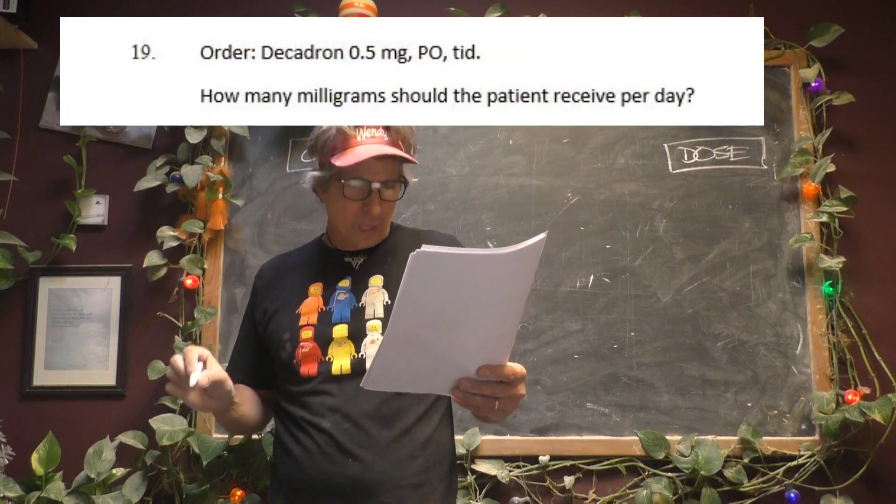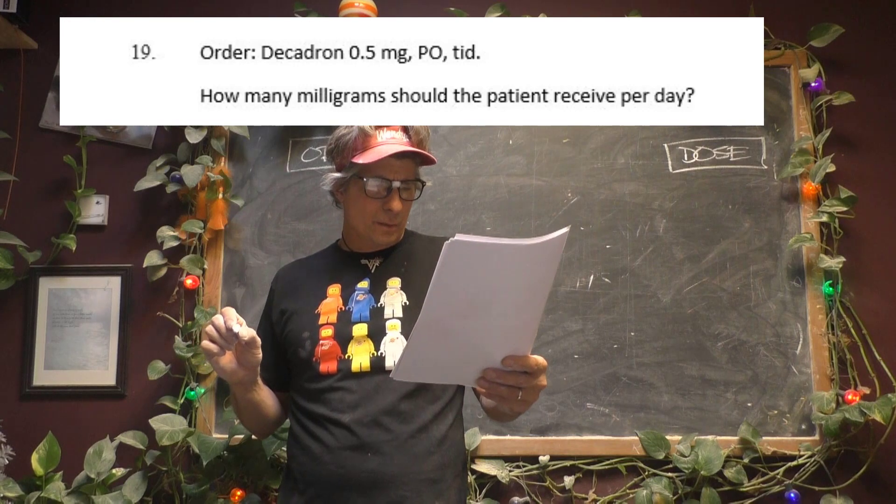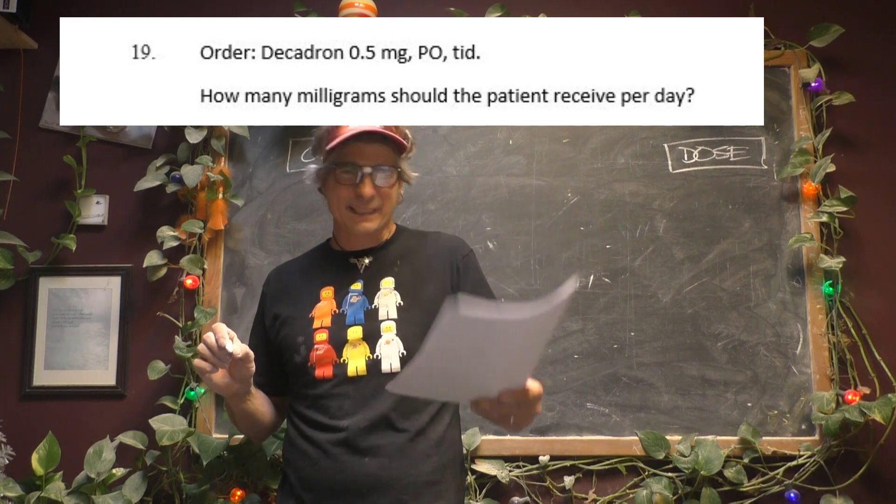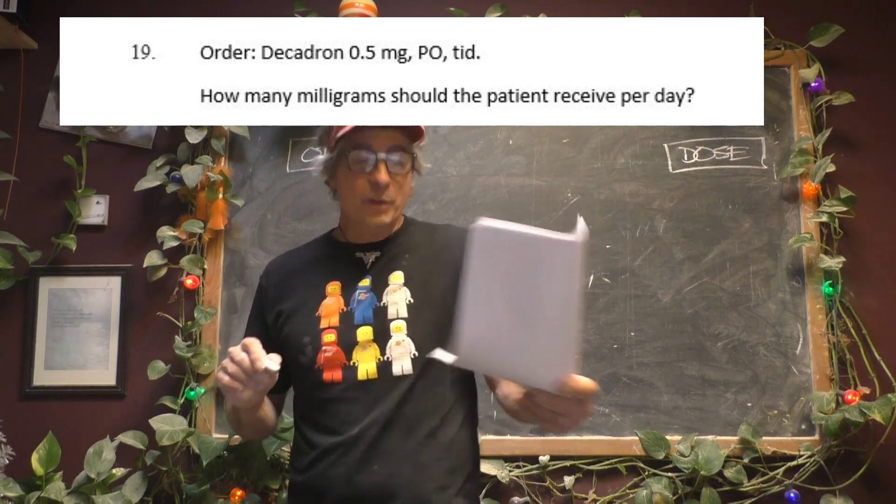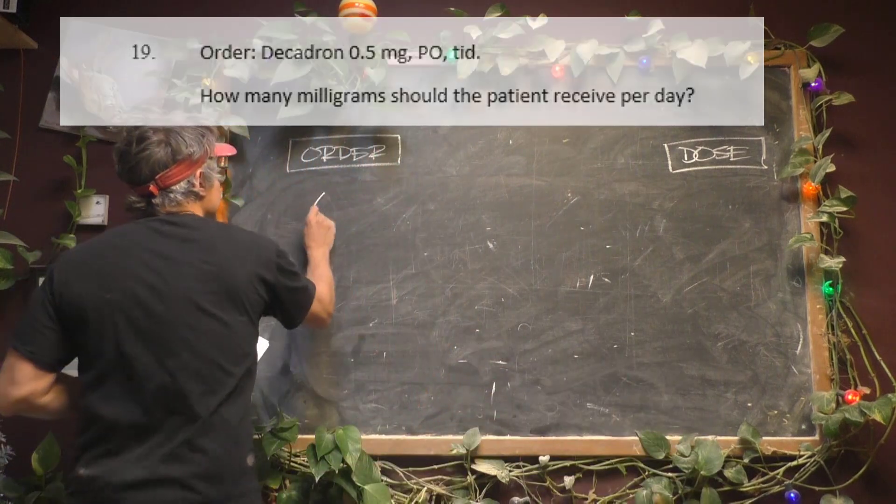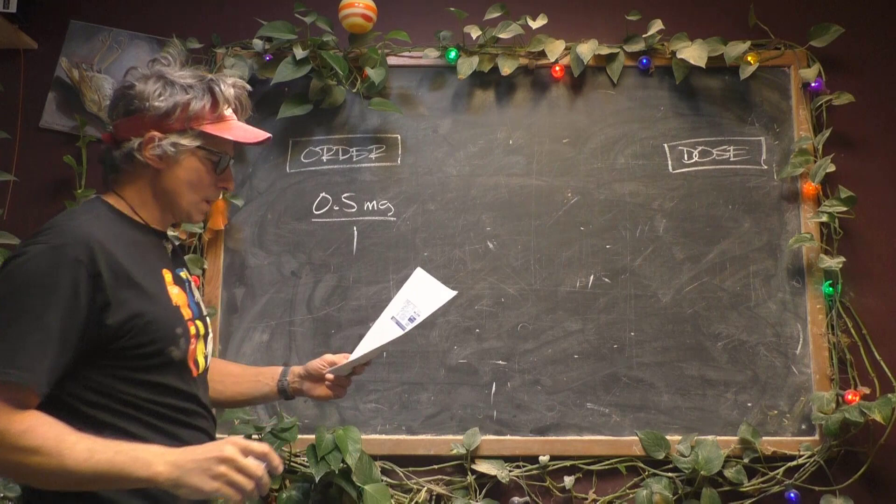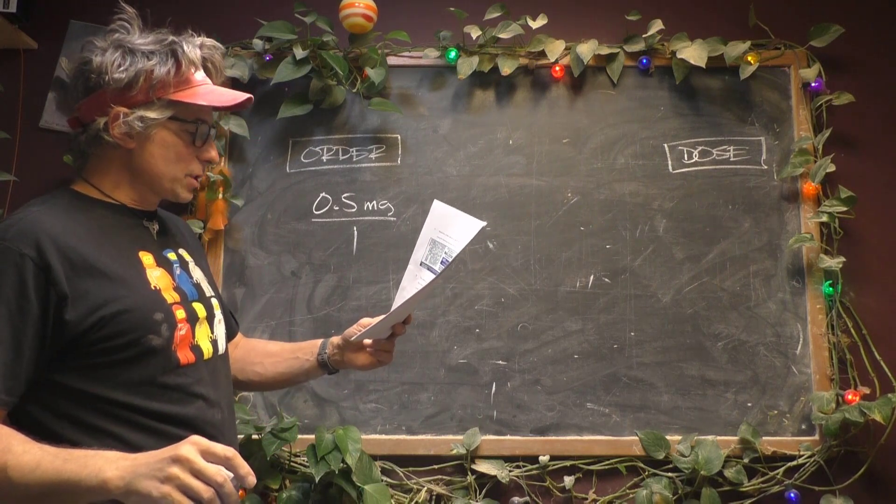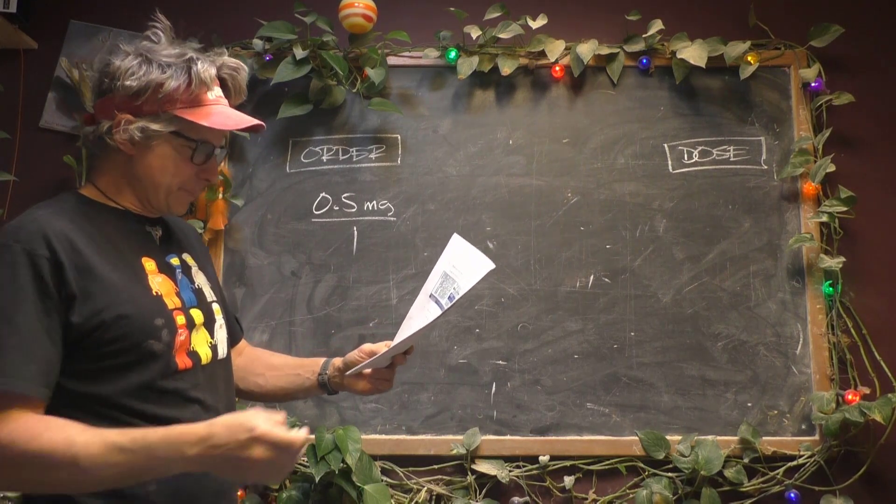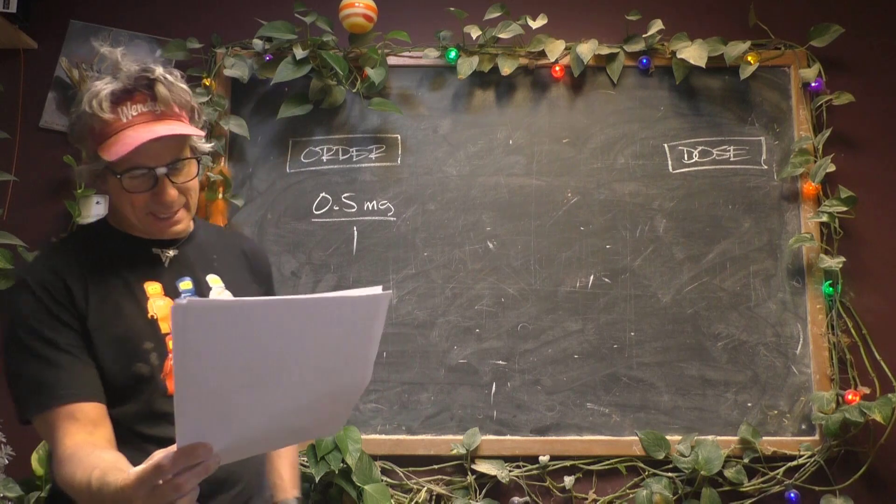All right, this one's got a label, so I'm stoked. Order, Decadron, sounds like a geometry term, 0.5 milligrams. How many milligrams should the patient receive per day?